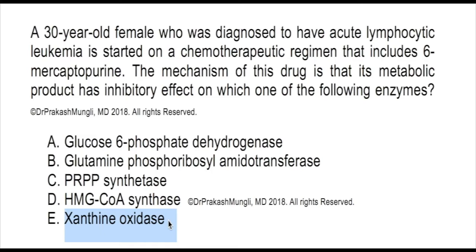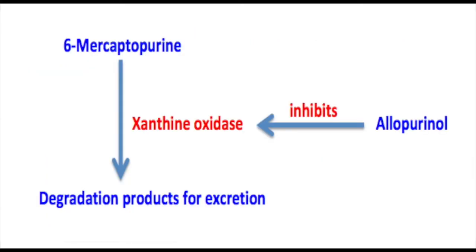Note that when a person takes 6-mercaptopurine, it is oxidized and metabolized into degradative products. Xanthine oxidase breaks down 6-mercaptopurine and helps in its elimination from the body. So whenever a drug is used to inhibit xanthine oxidase — for example, we inhibit xanthine oxidase in the treatment of gout using allopurinol — there is an important interaction to consider.